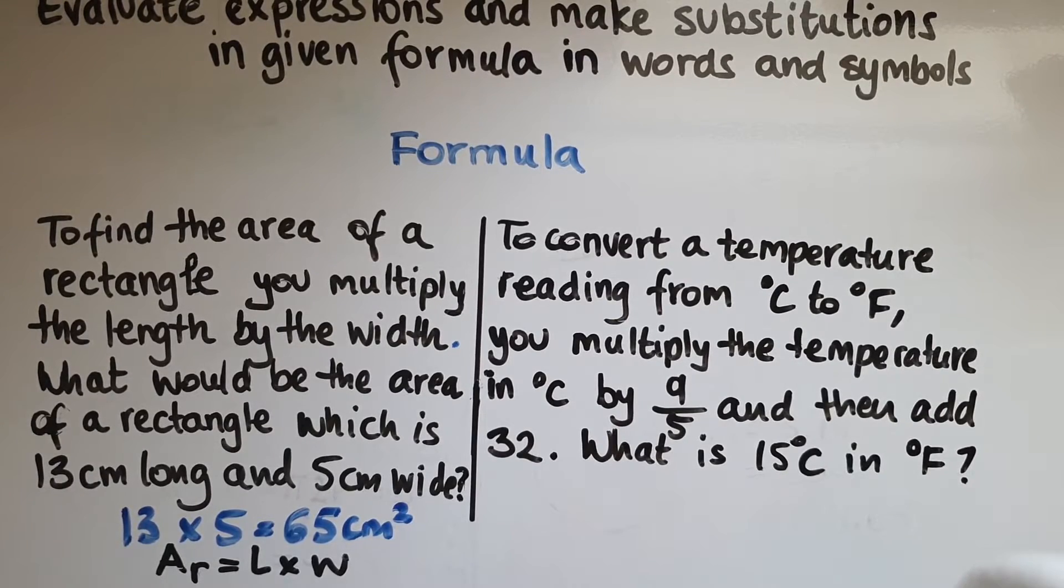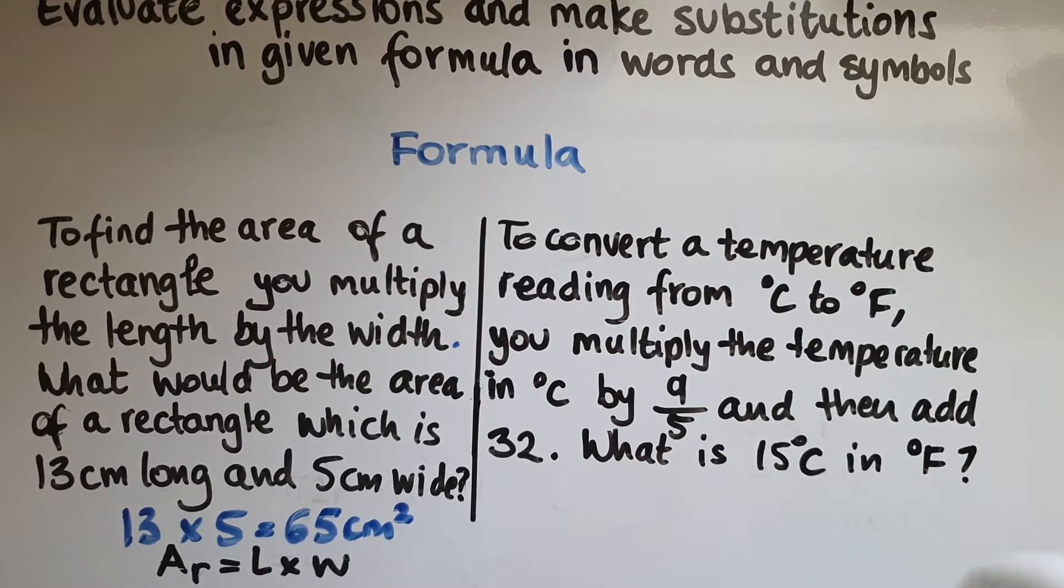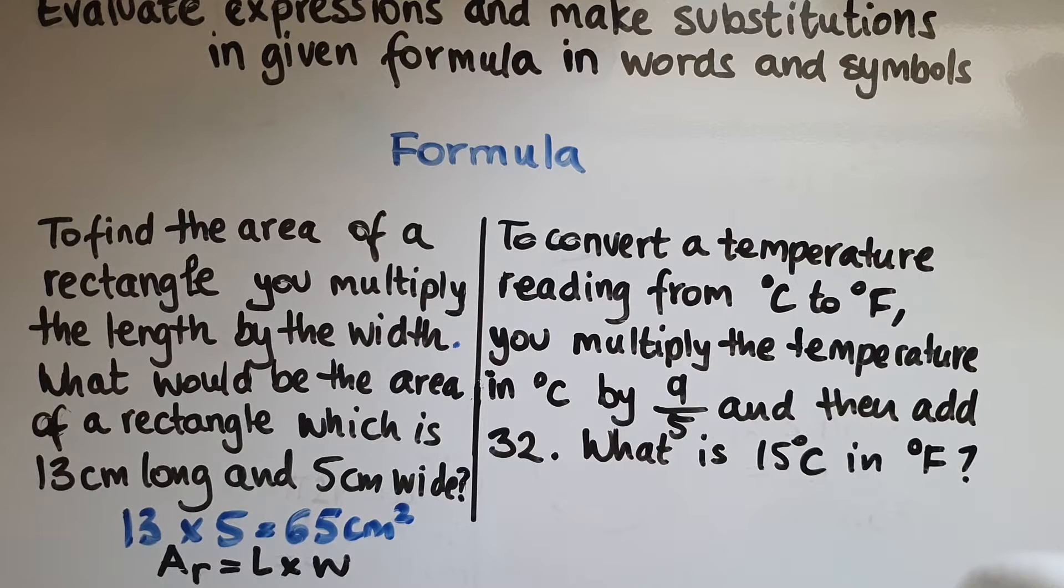The next question is saying to convert a temperature reading from degrees Celsius to degrees Fahrenheit, you multiply the temperature in degrees Celsius by 9 divided by 5 and then add 32. What is 15 degrees Celsius in degrees Fahrenheit?